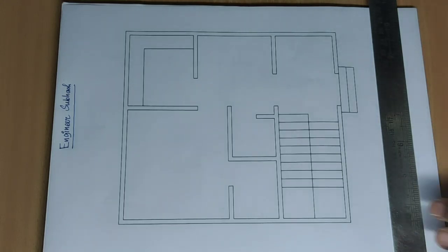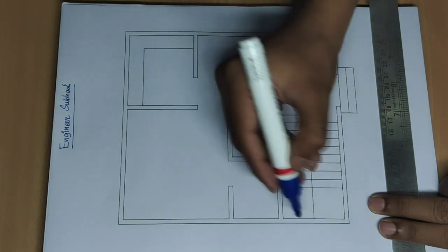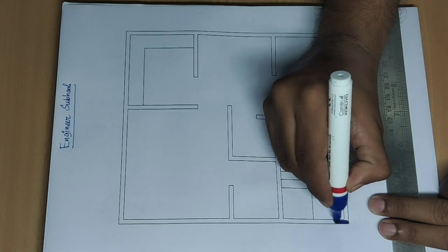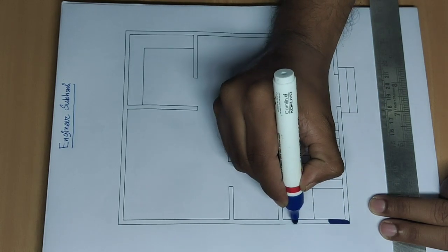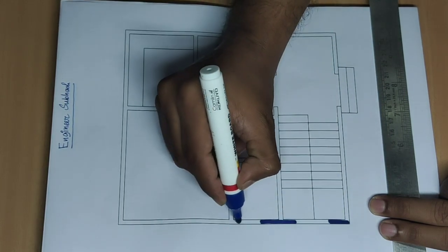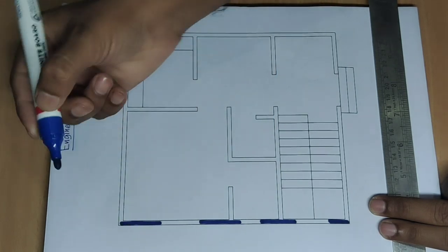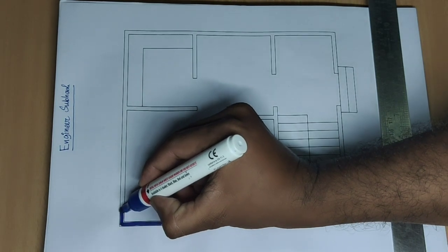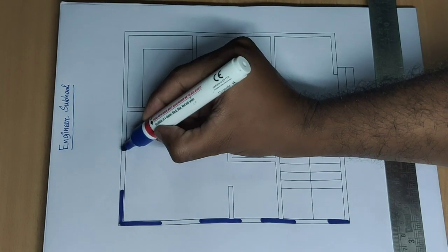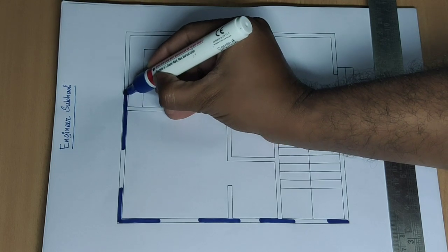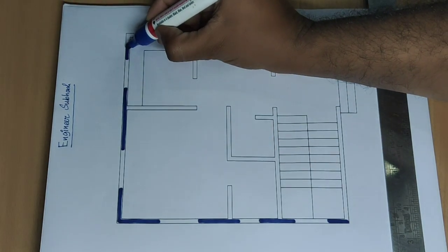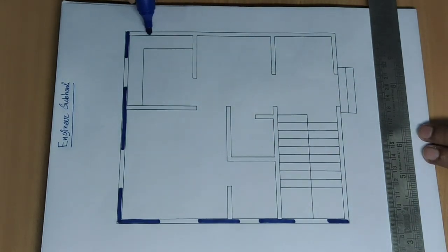20 x 22 feet one BSK house building plan. Start new building plan with wall marking, door and window marking at first. 20 x 22, 440 square feet house building plan.